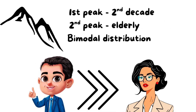It has a bimodal age distribution. The first peak is in children and adolescents in the second decade age group. The second peak is commonly seen in the elderly population. It is more common in men than women.